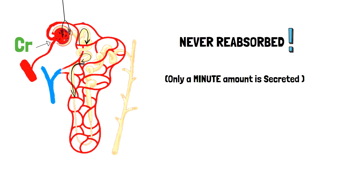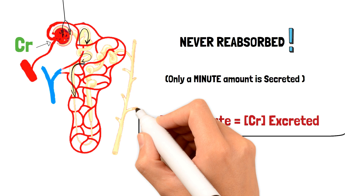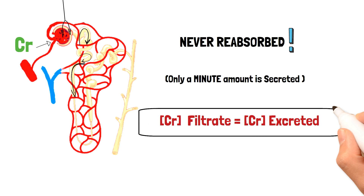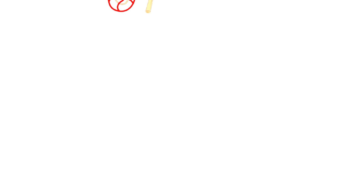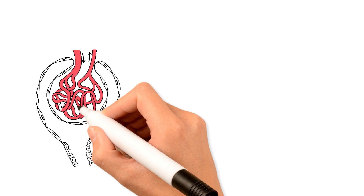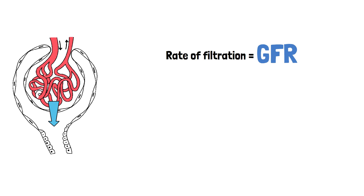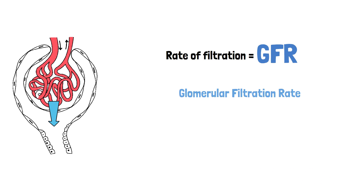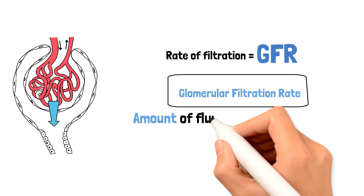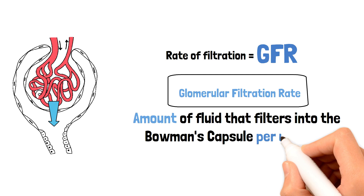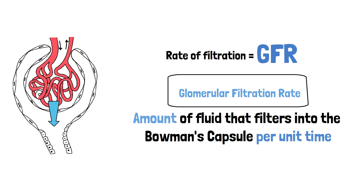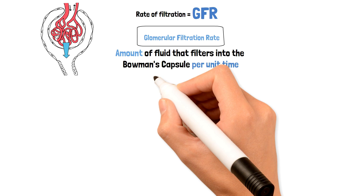Creatinine is never reabsorbed in significant amounts once in the tubule, and only a little is secreted. So it is safe to say that the creatinine concentration in the filtrate is equal to the concentration in the urinary excretion. The rate at which it is filtered is known as GFR, or glomerular filtration rate — the amount of fluid that filters into the Bowman's capsule per unit time.